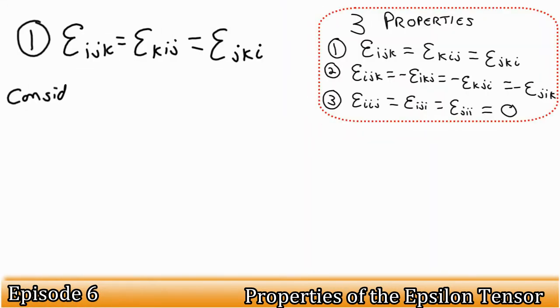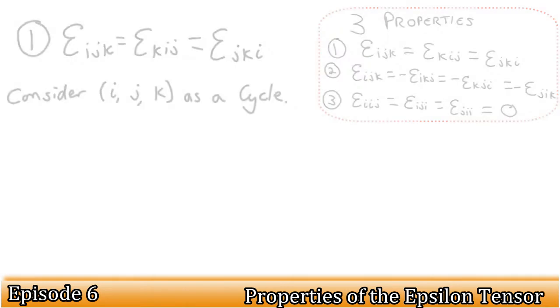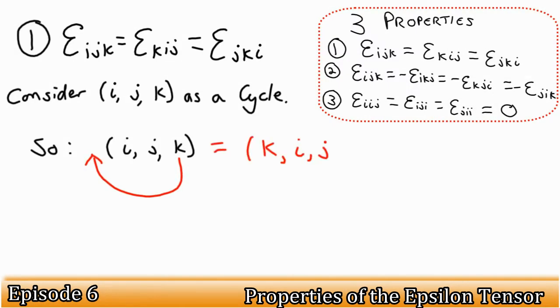Let's have a closer look at property one. We describe the way the indices change as a cycle because you take the last index and move it to the front of the list. This is similar to how we viewed the list of numbers in its definition. It may be easier to think of it in the way that we can say that epsilon i, j, k is the same as any epsilon with the indices found in the following string of letters: i, j, k, i, j.